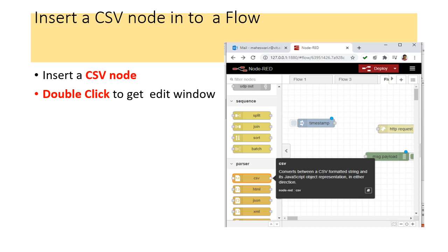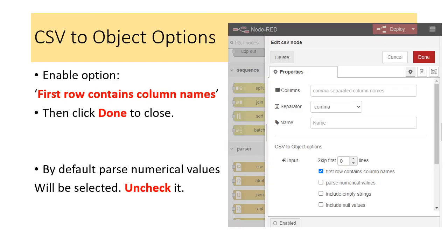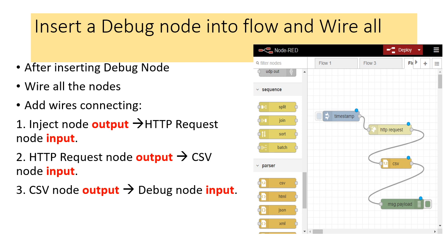Click done, then insert a CSV node into the flow. Double-click the CSV node to get the edit window. A very important point: you need to enable 'First row contains column names.' You should enable this in order to retrieve the column names. By default, 'Pass numerical values' may be activated — you can deactivate or uncheck it. Make sure 'First row contains column names' is activated, then click done.